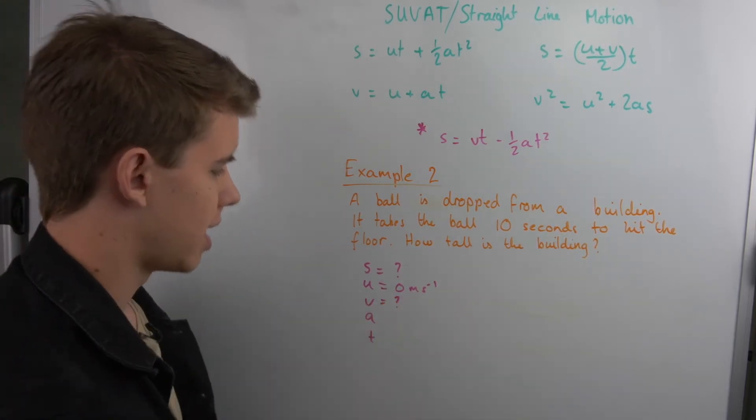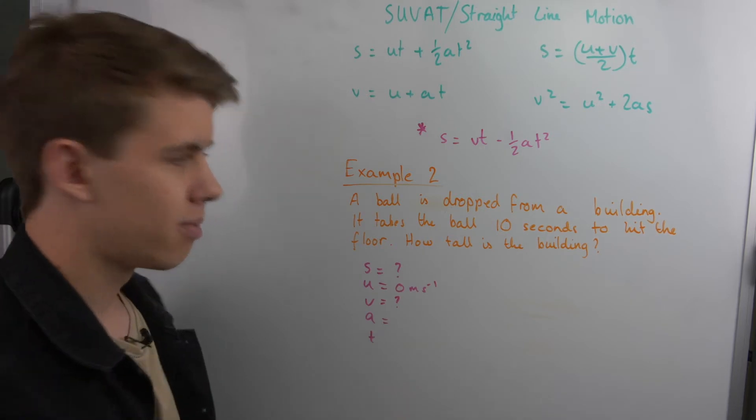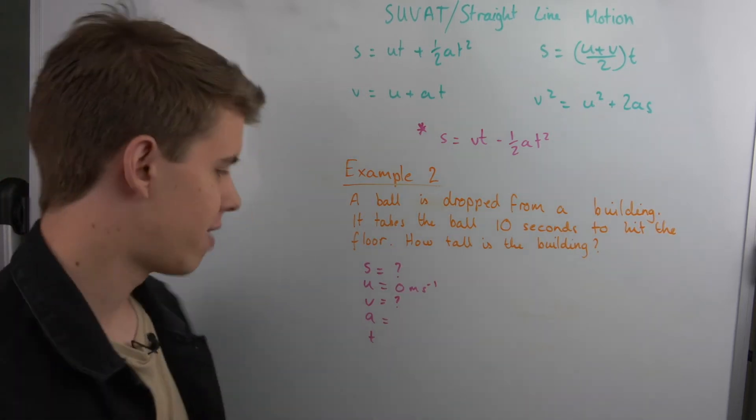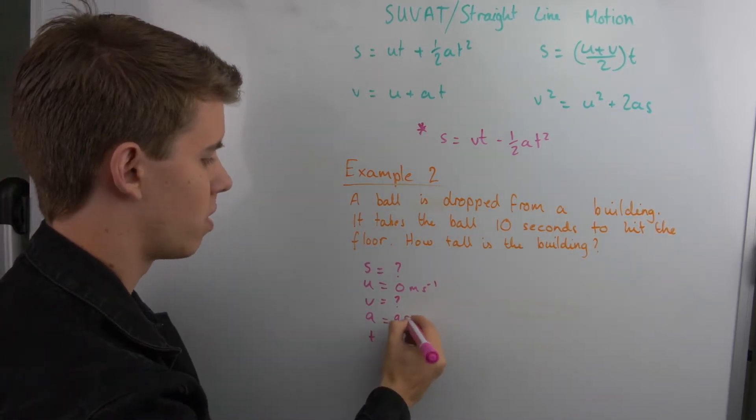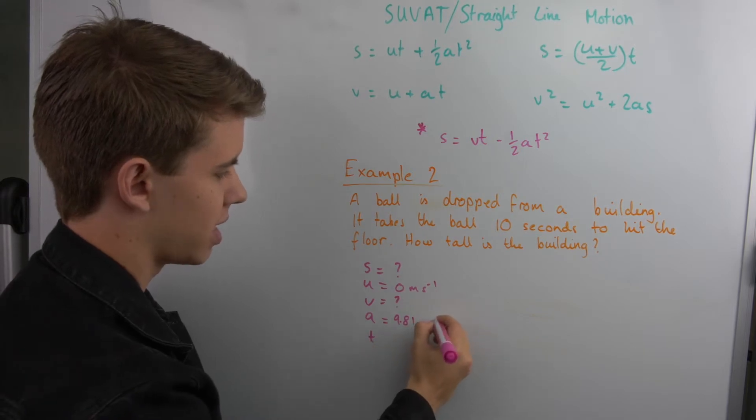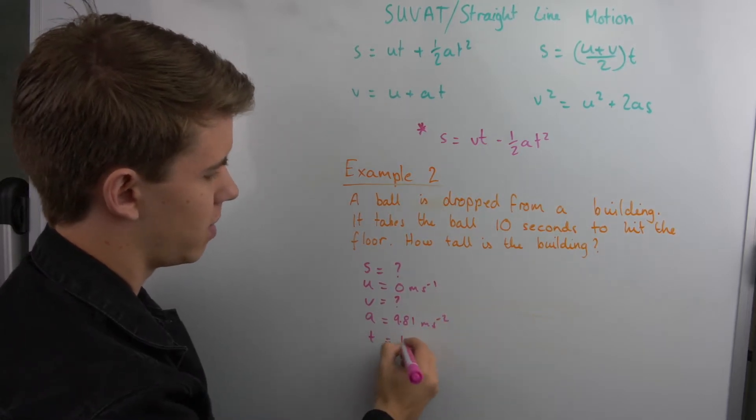And so we can't say anything about that. A, like I said, because it's falling due to gravity, our acceleration is 9.81 meters per second squared. And our time is 10 seconds.